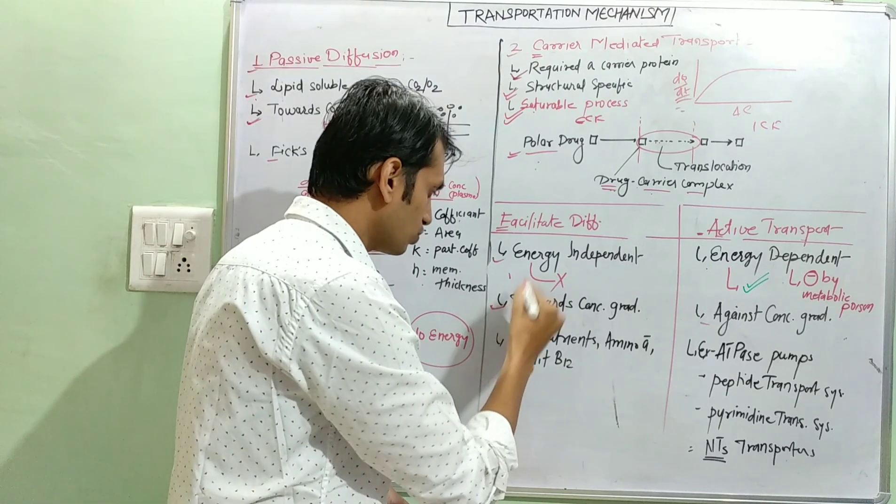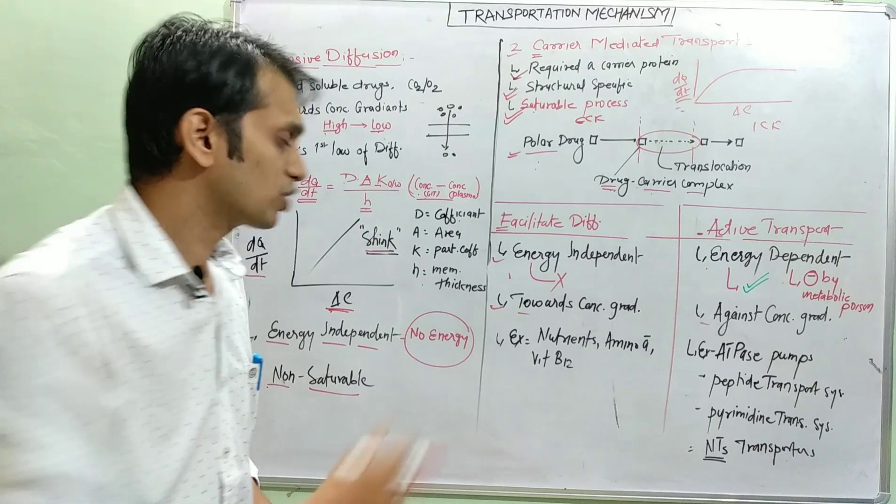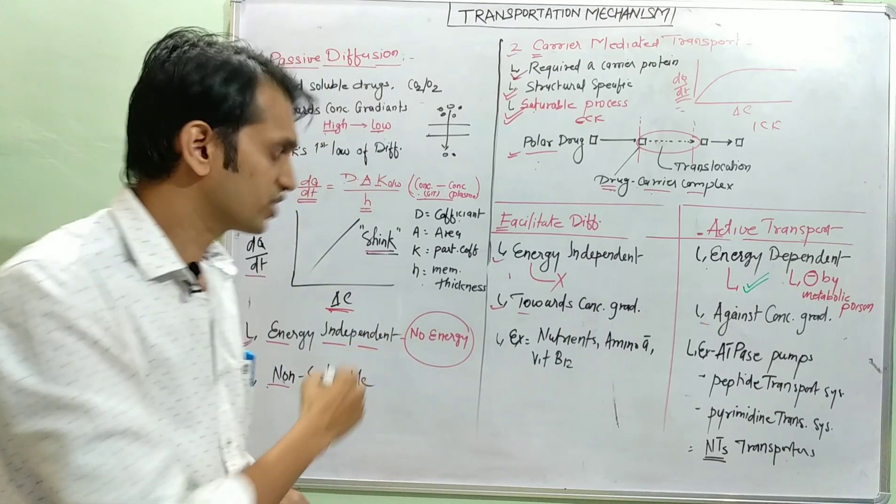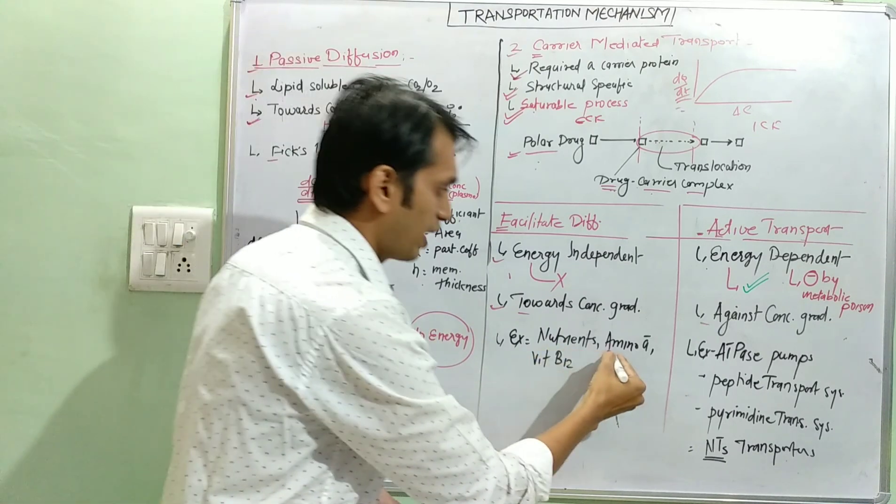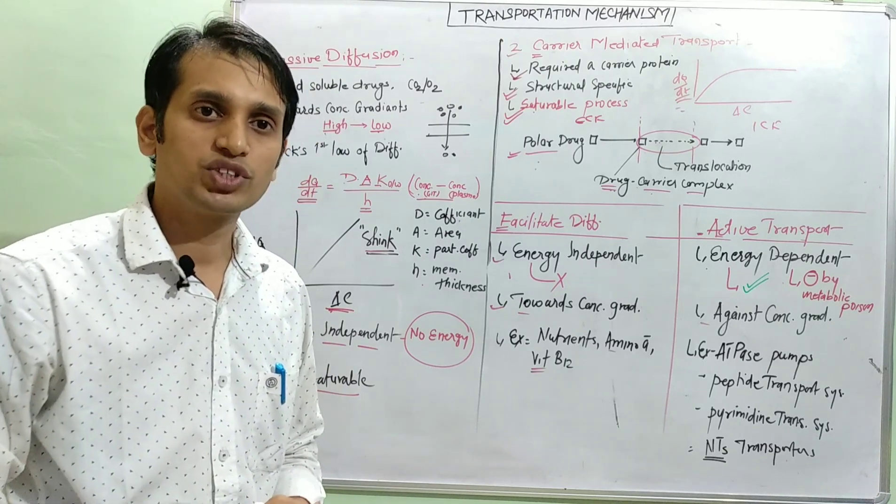And it occurs towards the concentration gradient, similar to the passive diffusion, but it is a faster process than passive diffusion. Like nutrients, amino acids, and vitamin B12 cross the biological membrane through facilitated diffusion.